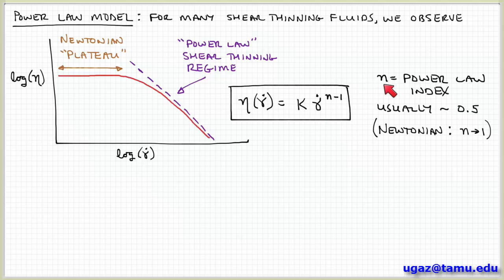And n, in particular, is of interest. That's the power law index. And it's usually around a value of a half or so for non-Newtonian fluids. We'll see that in a minute. You can see as n goes to 1, this exponent goes to 0. I recover Newton's law of viscosity for a Newtonian fluid as the power law index goes to 1.